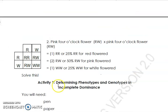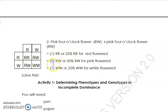Problem 2: pink four o'clock flower (RW) crossed with another pink four o'clock flower (RW). Combine: R×R = RR, R×W = RW, W×R = RW, W×W = WW. How many are RR? One out of four — that is 25%. How many are RW (pink)? Two out of four — that is 50%. How many are WW (white)? One out of four — that is 25%.